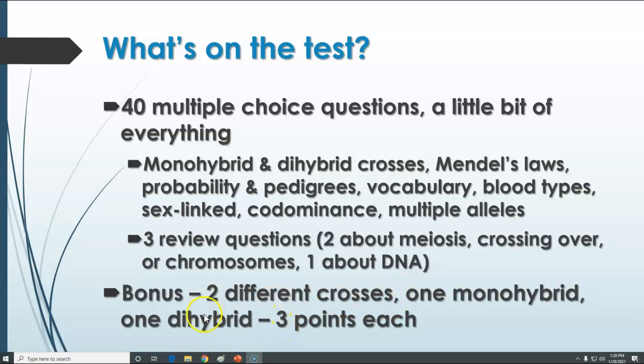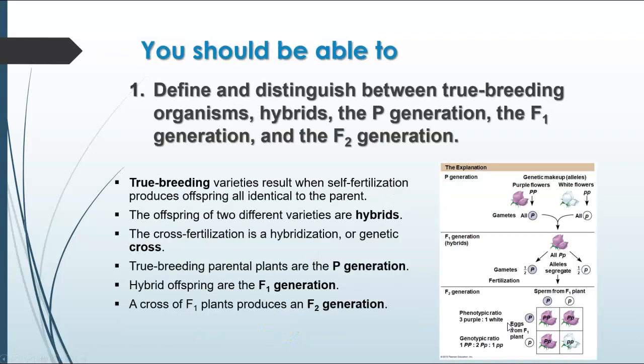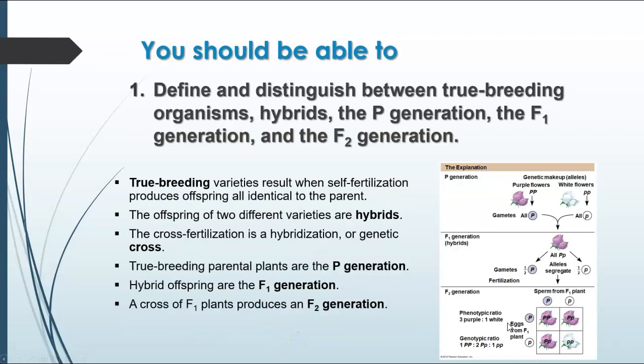So we're going to go on from there and talk about what's going on. There are various things you should be able to do, and what I did here is basically go back and pull some of the information from the notes slides to reinforce all these things that you should be able to do on this test. So you should be able to define and distinguish between true breeding, hybrids, the P generation, and that kind of stuff.